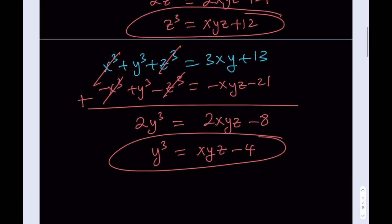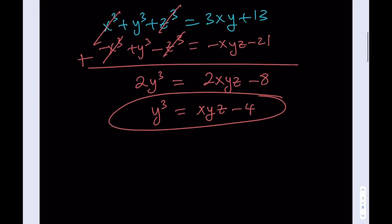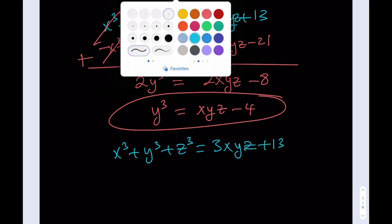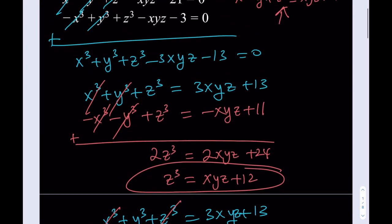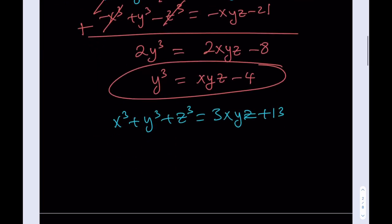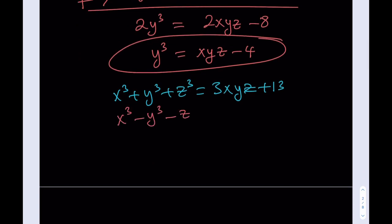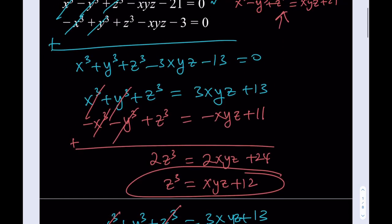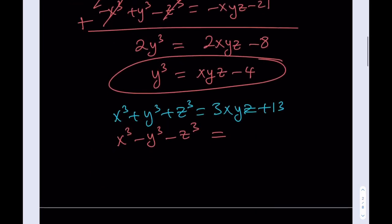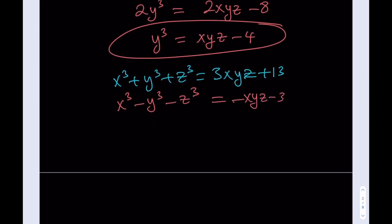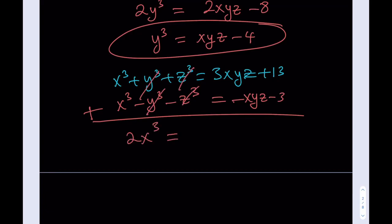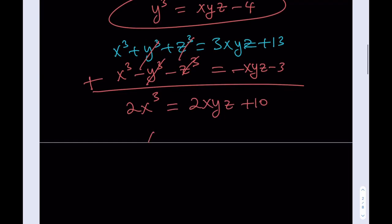Finally, we're going to use the blue expression again — x cubed plus y cubed plus z cubed equals 3xyz plus 13 — and use the third equation, but negate it: x cubed minus y cubed minus z cubed equals negative xyz minus 3. When you add these two equations, y cubed and z cubed cancel out, and you end up with 2x cubed equals 2xyz plus 10, which gives x cubed equals xyz plus 5.